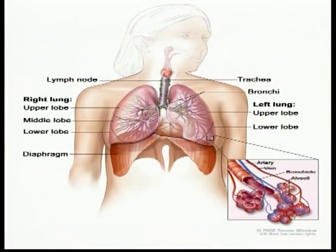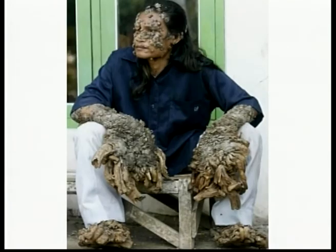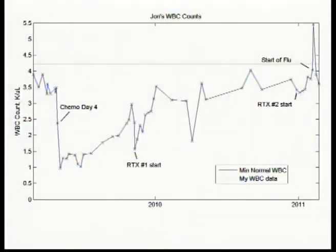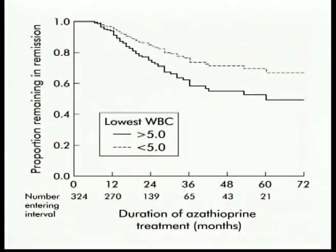Human beings are also affected by radiations. Skin cancer called melanoma, lung cancer, breast cancer, cataracts in the eye, and leukemia are diseases resulting from radiations. Loss of hair, blood vomiting, and reduction in WBC count are common effects on human beings due to radiations.